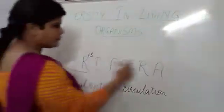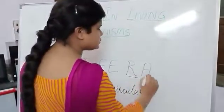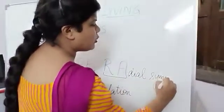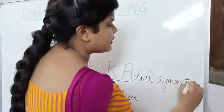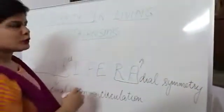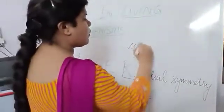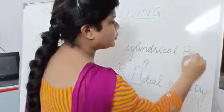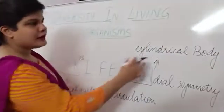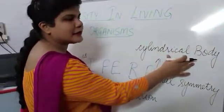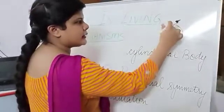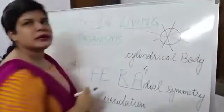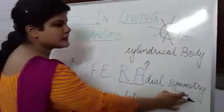Another characteristic of Porifera: take the alphabets R-A, which tells us that all Porifera have radial symmetry. Radial symmetry — because they all have a cylindrical body. When any organism has a cylindrical body, if you cut it through any plane, it will always give you two equal halves. That is the meaning of radial symmetry.